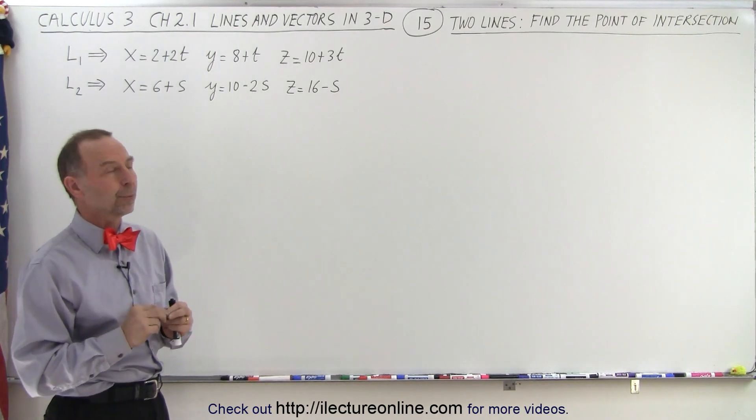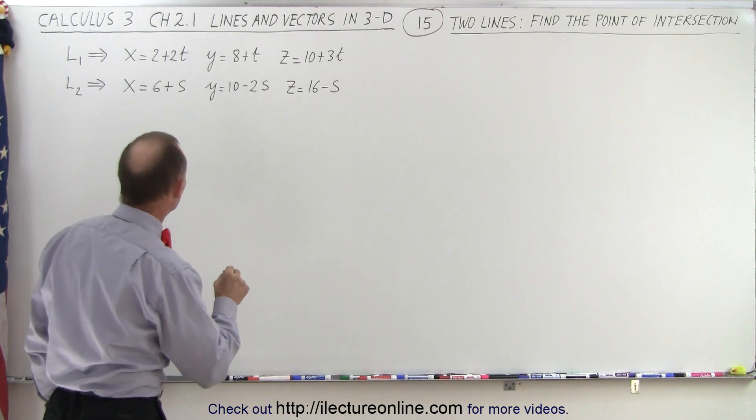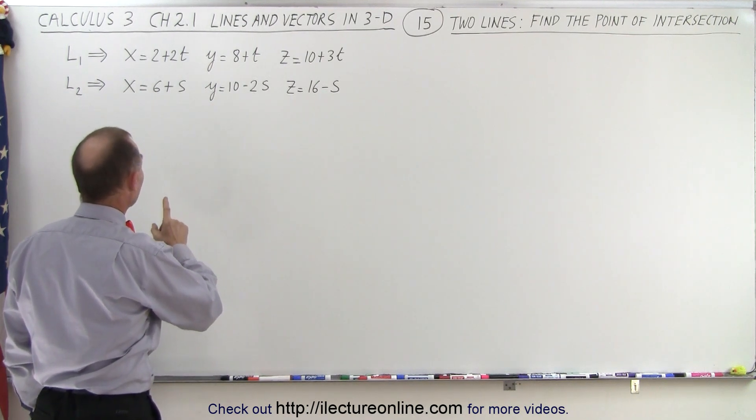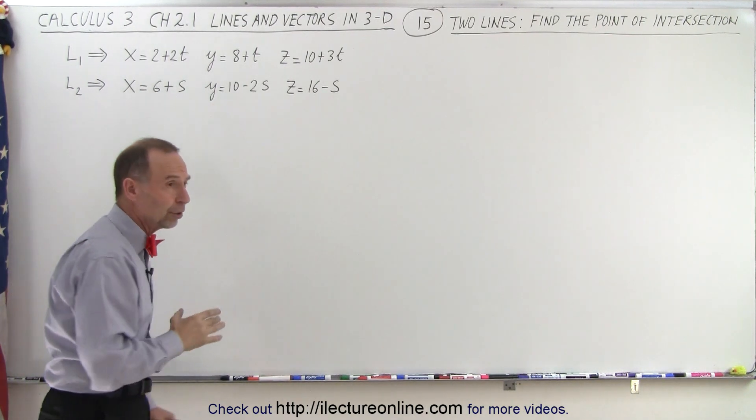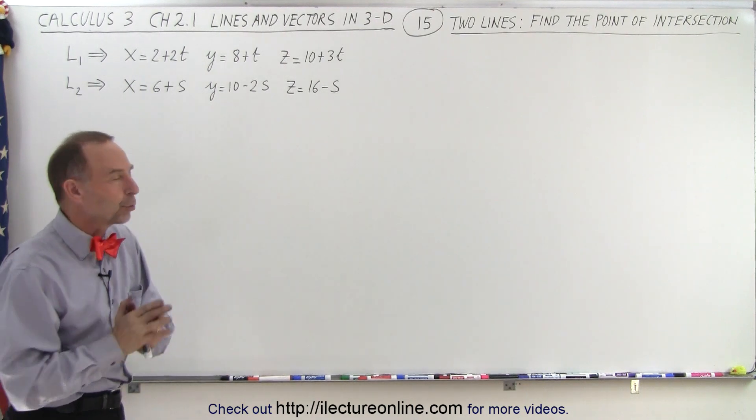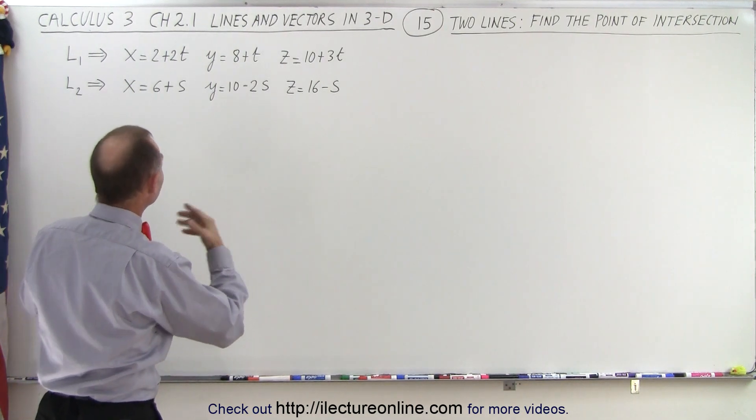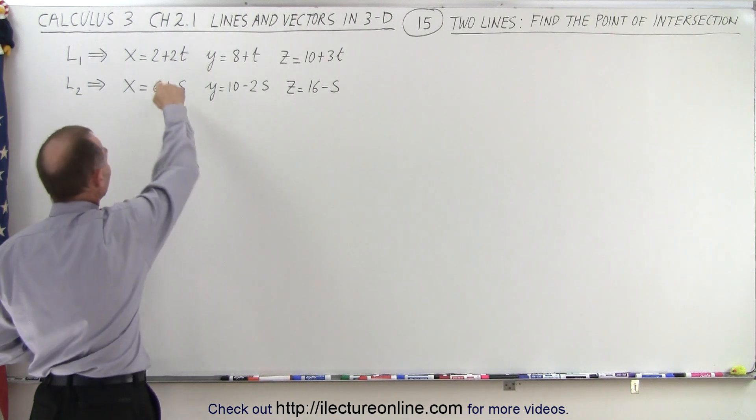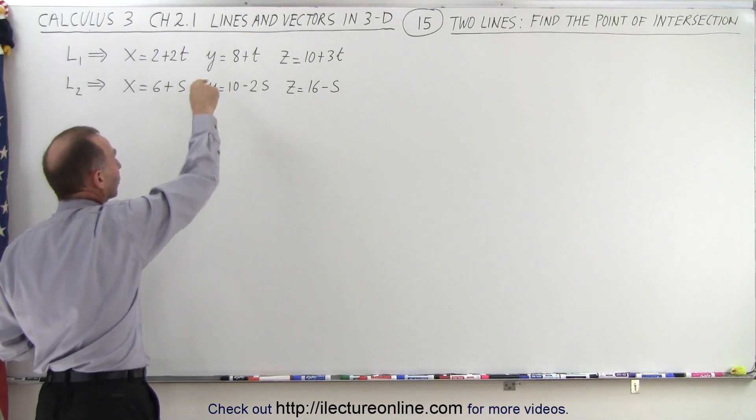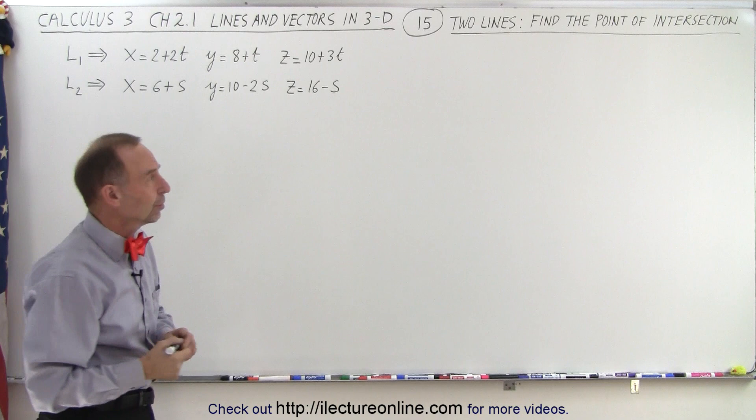At what point do they cross? Well, if they cross, there must be some point that has an x, a y, and a z coordinate where they're the same for both equations. So in order to find that point, we're going to set the x's equal to each other, and we're going to set the y's equal to each other.